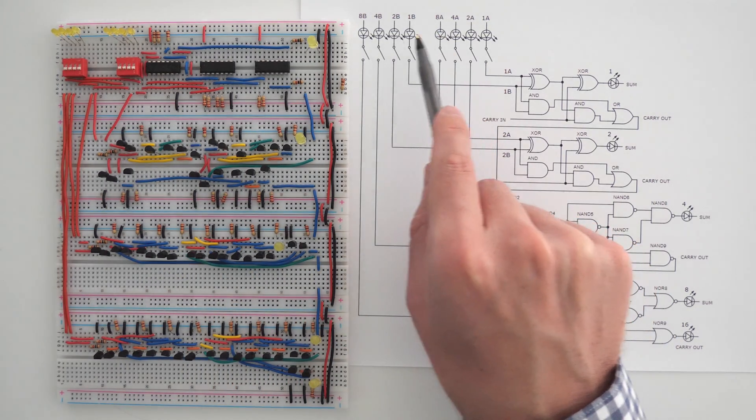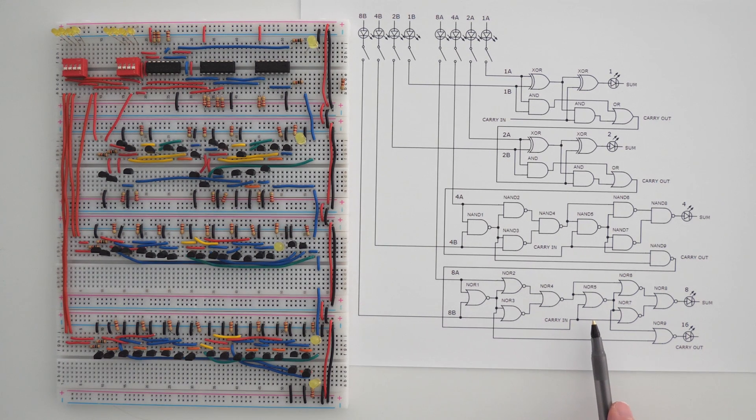Then we have input 8A and 8B, which come down into the fourth full adder, which is made with nine NOR gates. One NOR gate is also two transistors. So we have NOR gate 1, NOR gate 2, NOR gate 3, etc.